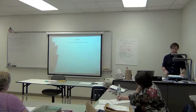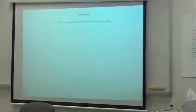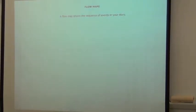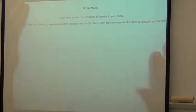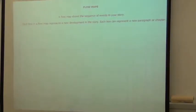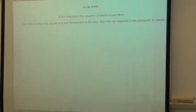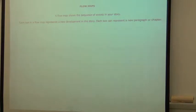A flow map shows the sequence of events in your story. It's basically a chart that helps you outline everything that is happening in your story. Each box in a flow map represents a new development in the story. Each box can represent a new paragraph or chapter. And the reason why I included chapter, because some of you might be thinking, oh, I've got to write chapters and stuff.